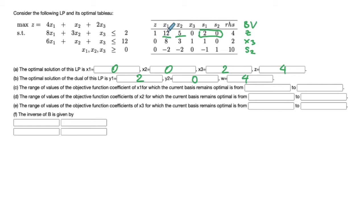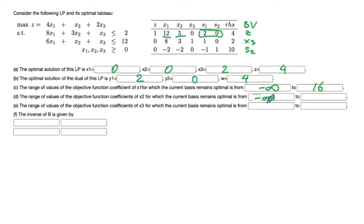For x1, the coefficient needs to increase by at least 12 (delta = 12) to enter the basis. Reducing the coefficient keeps the current basis optimal since x1 is not in it. Therefore the range for c1 is from negative infinity to 12 + 4 = 16. Similarly, for x2 the reduced cost is 5, so the range is from negative infinity to 5 + 1 = 6.